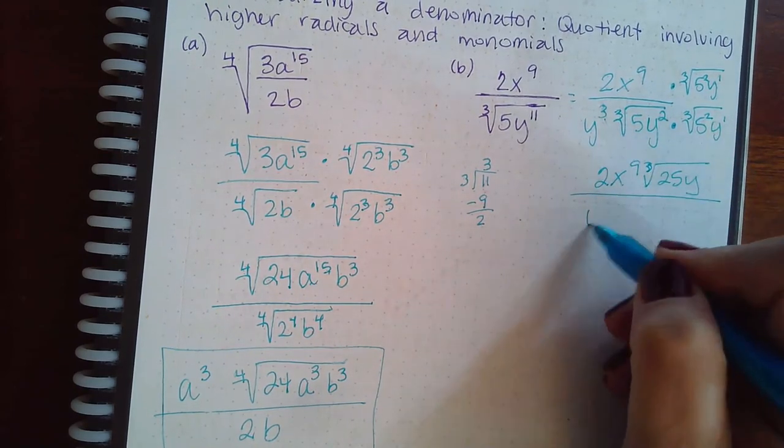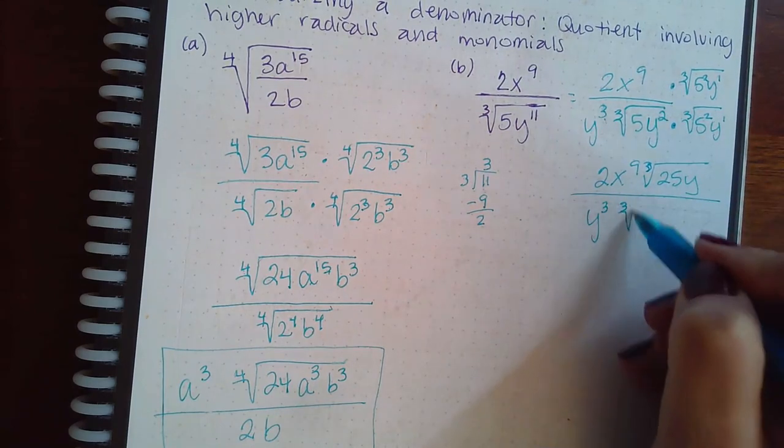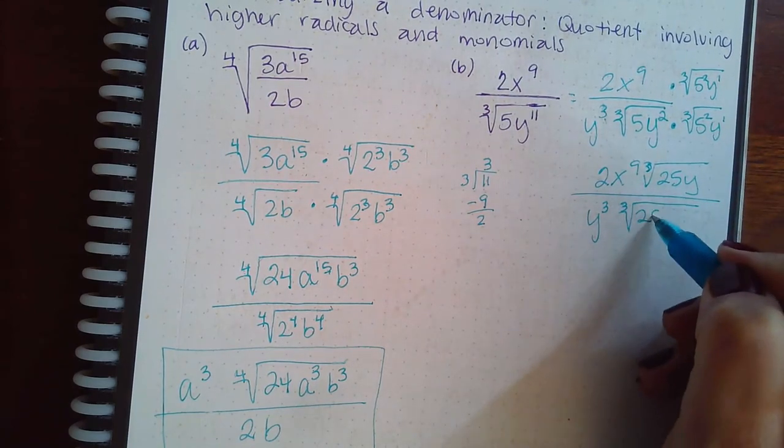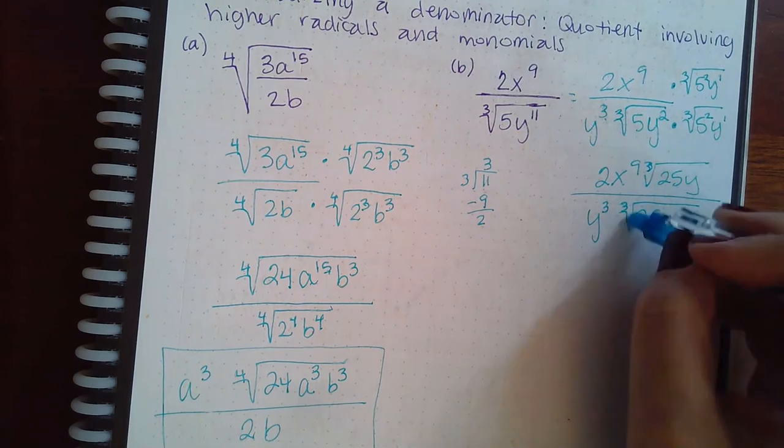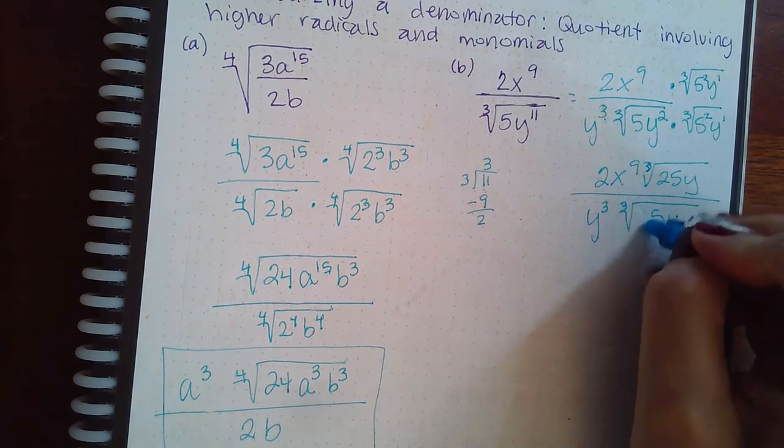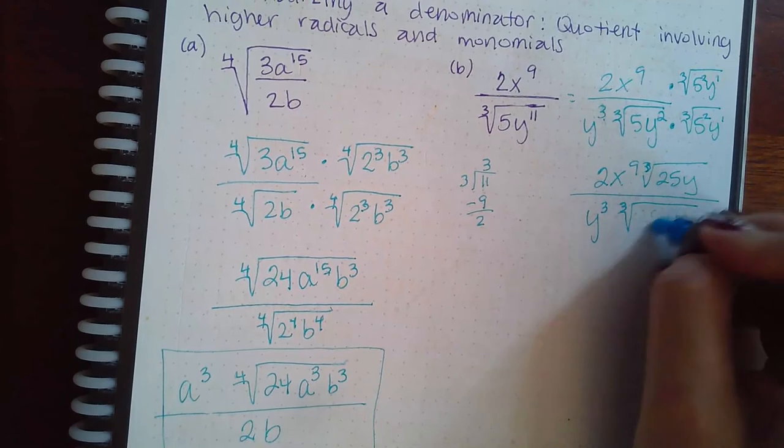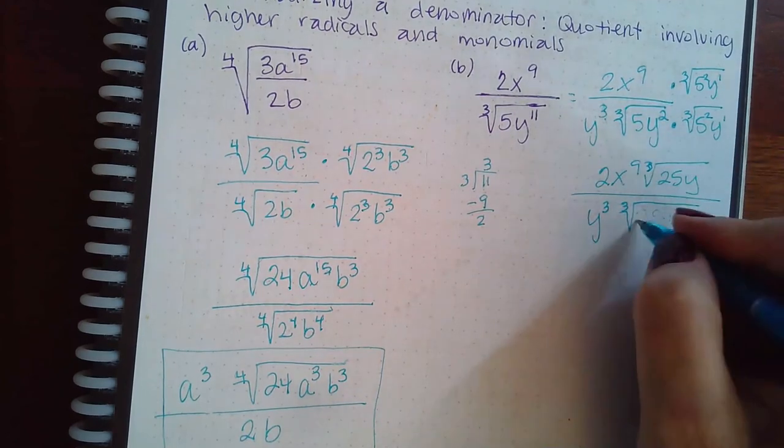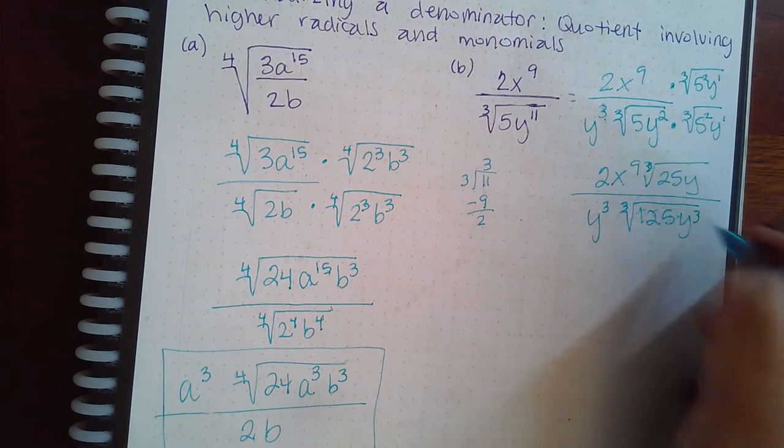Downstairs, I have this y cubed on the outside. And then on the inside, I end up with 25, oh, I'm sorry, 125. Because 5 times 5 squared is 125 y to the 3rd power.